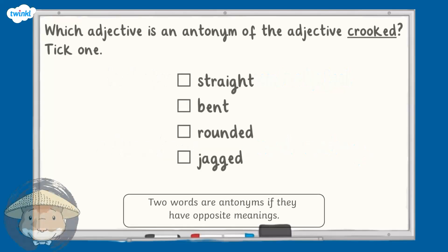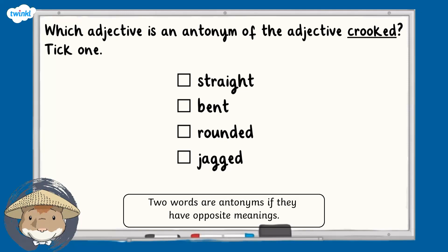In this question you're being asked to tick an antonym for the adjective crooked. Which adjective is an antonym of the adjective crooked? Tick one. Straight, bent, rounded, jagged.